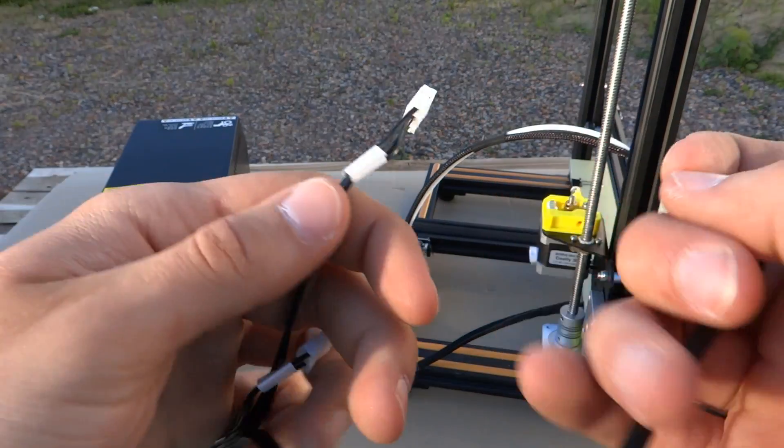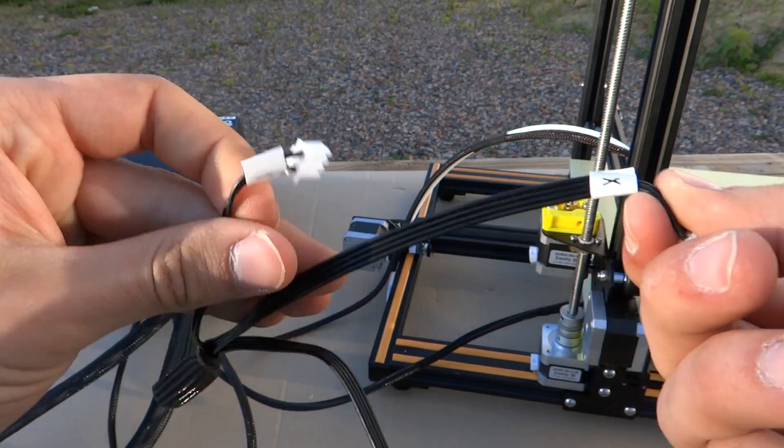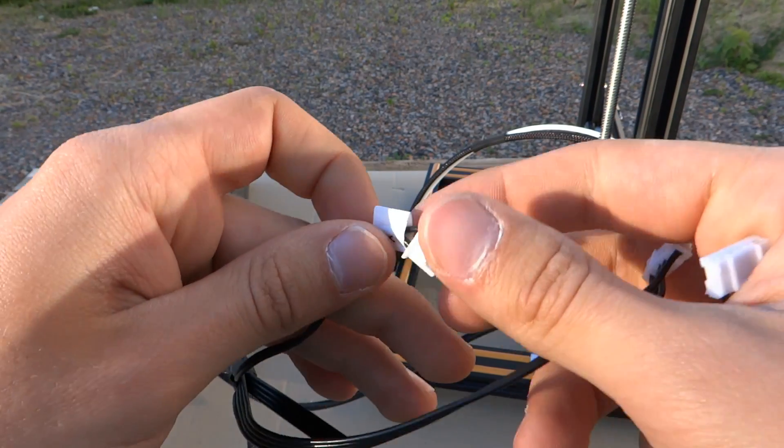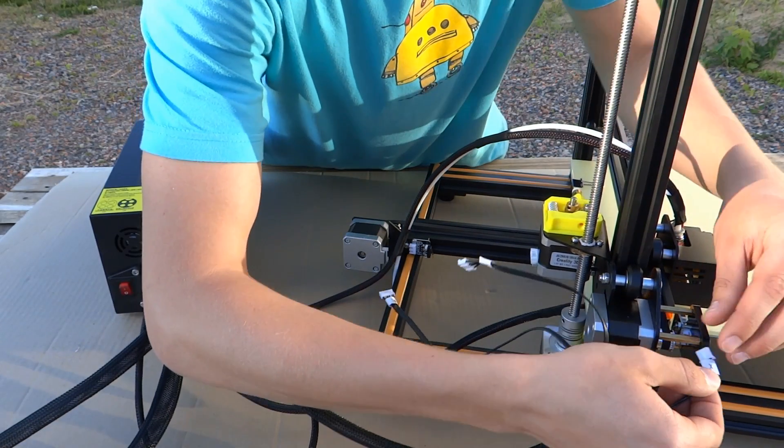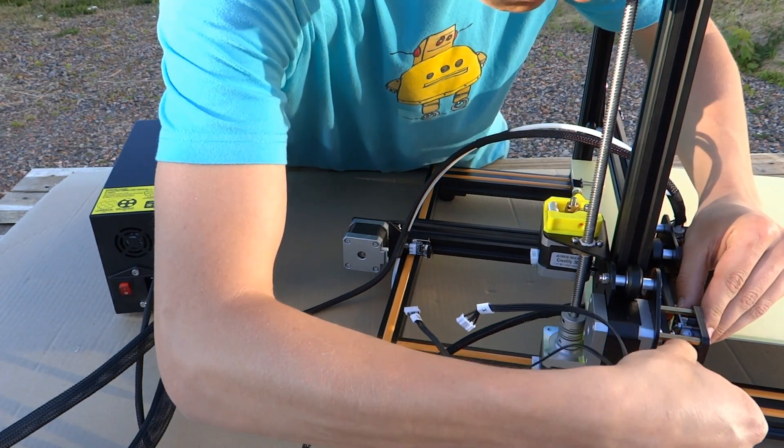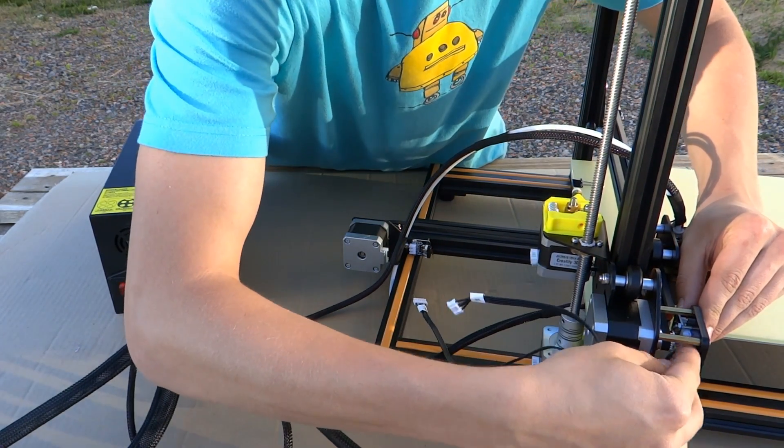Then we can connect all of those small cables to stepper motors and end stops. Let's begin with X axis and extruder. End stop is in the front of X axis motor and the extruder is next to the X axis motor with the yellow plastic element on it.